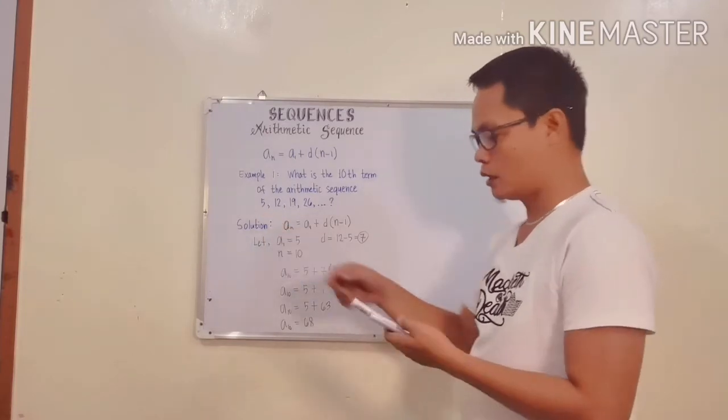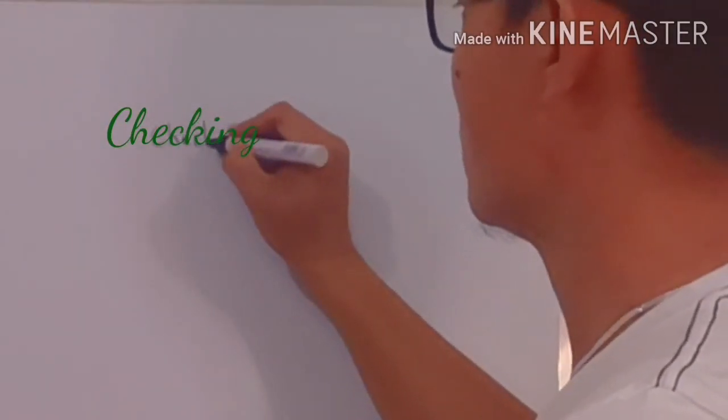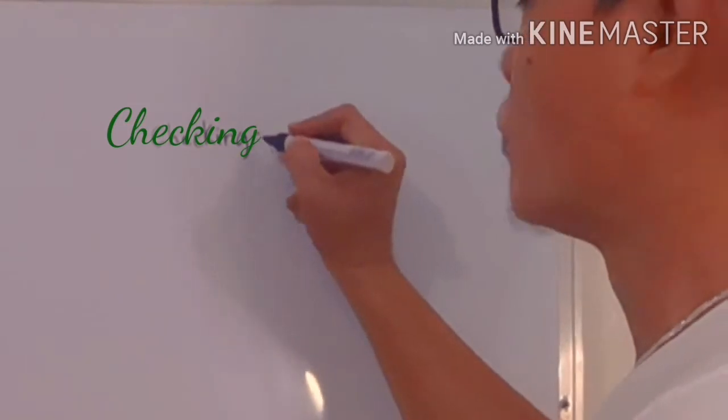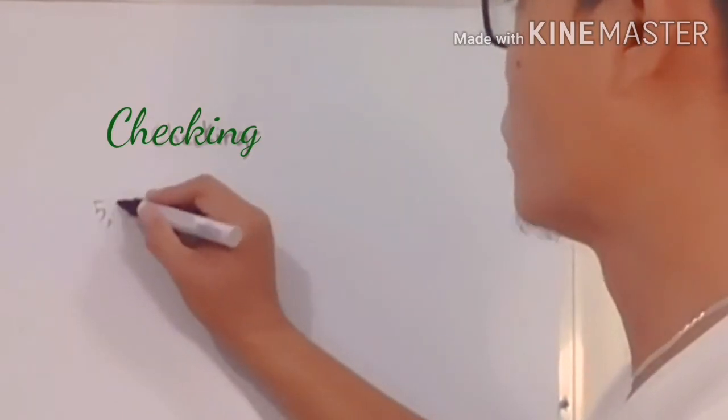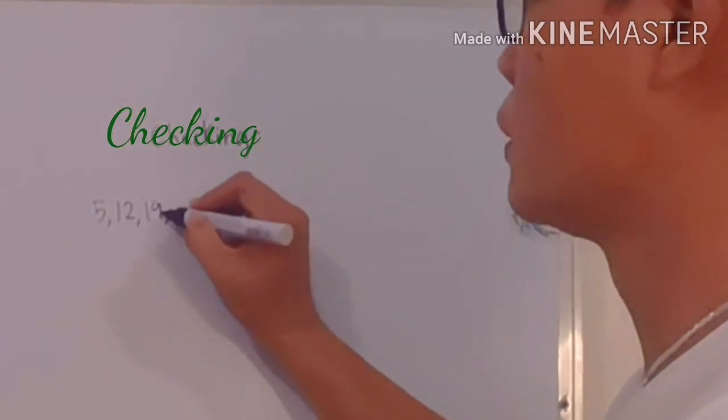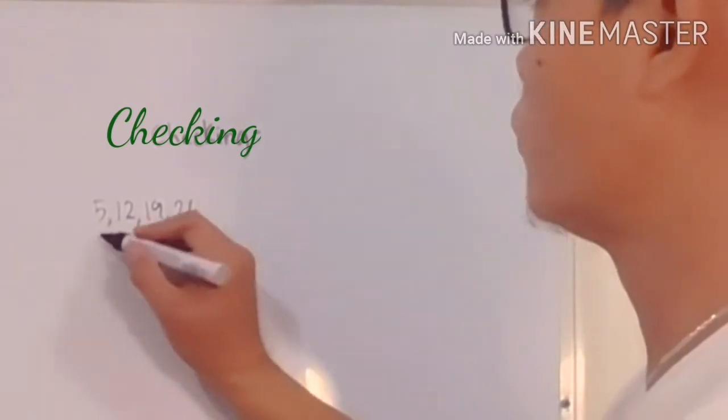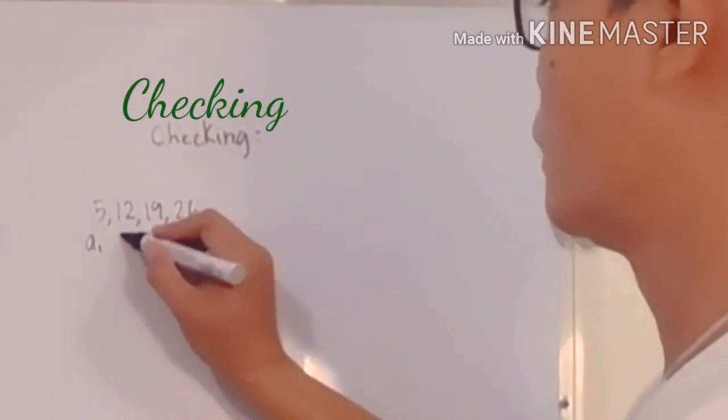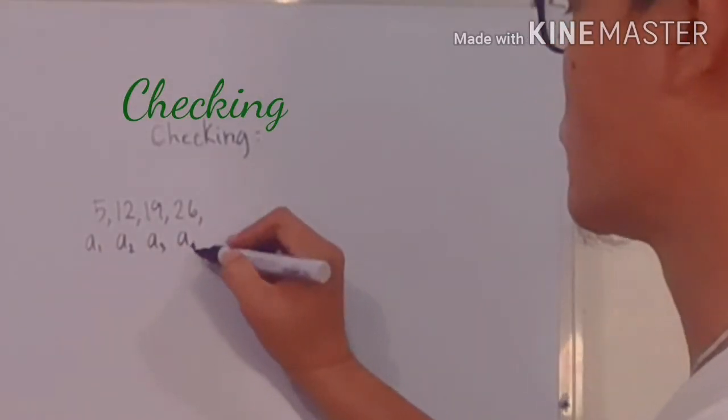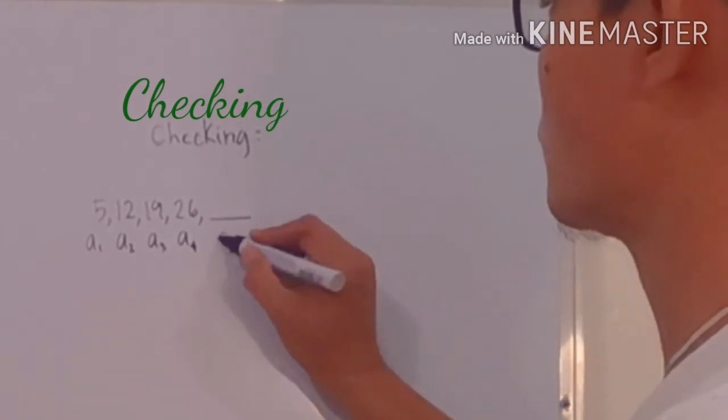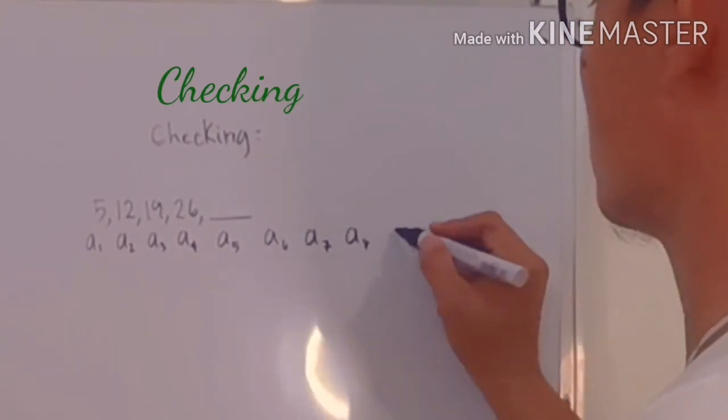By using a practical method, we are going to check kung totoo ba siya. Let's prove it if the value of the 10th term is 68. Let's begin on getting the given. Checking - this is just part of to be sure. So let's check. We have 5, we have 12, we have 19, we have 26. Now if you can see, these are just the given. The value of 5 is the first term, the value of 12 is the second term, the value of 19 is the third term, the value of 26 is the fourth term. We are going to use or we need to get the 10th term.